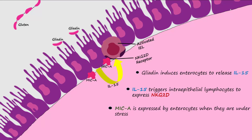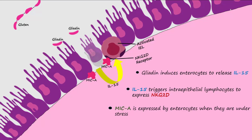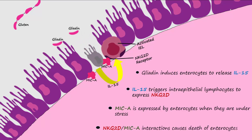In certain individuals, gliadin exposure itself may also increase enterocyte expression of MICA. NKG2D-MICA engagement will trigger the IEL to kill the enterocyte by releasing granzymes and perforins to bring about cell lysis.